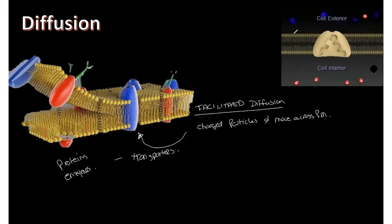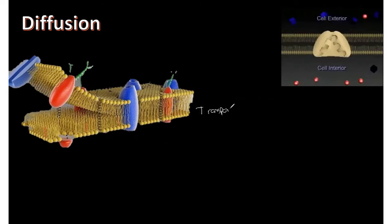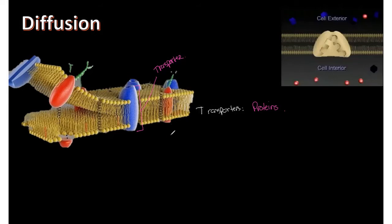Transporters are an integral part of the transmembrane — often proteins embedded into the bilayer spanning the entire plasma membrane. They're like a door to a house: you need the right key to open it. You must be the right charge, ion type, or particle to enter that channel and diffuse across.